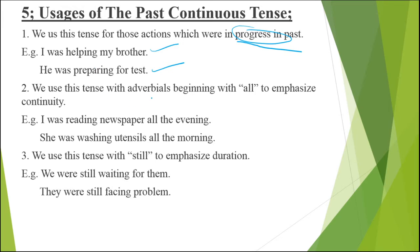Next, we use this tense with adverbials. Adverbials are the time references you are going to mention. Adverbials are of three types: time, place, and manner. When we talk about adverbials of time, that comes in past, present, or future. Here you will be using adverbials of past. You will be using adverbials with 'all' to emphasize and stress upon the continuity of an action — expressing that it was continued all the evening, all the day, etc.